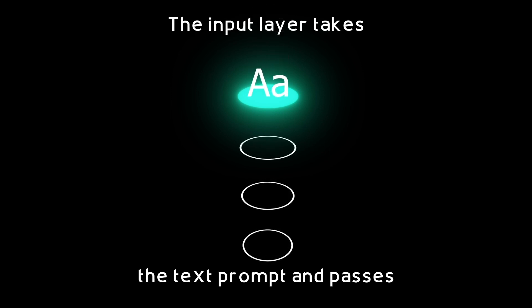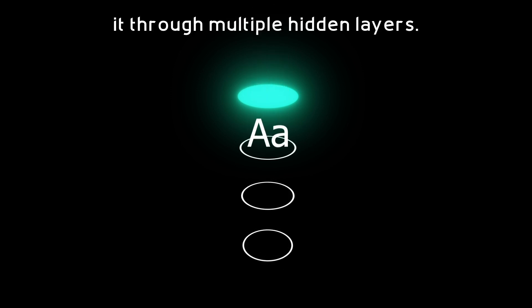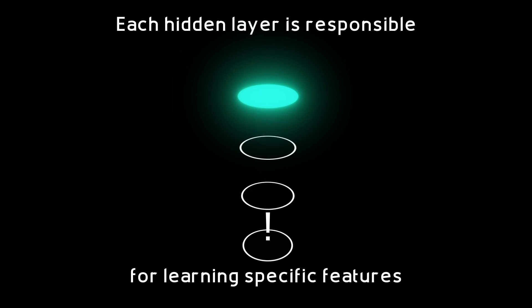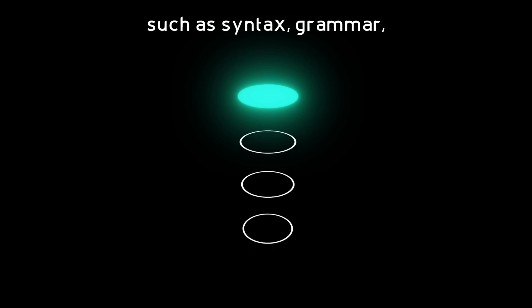The input layer takes the text prompt and passes it through multiple hidden layers. Each hidden layer is responsible for learning specific features of the input text, such as syntax, grammar, context, and meaning.